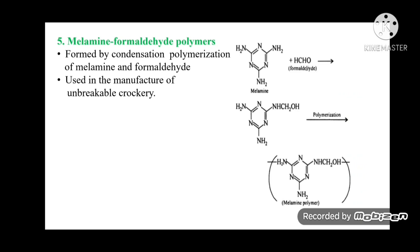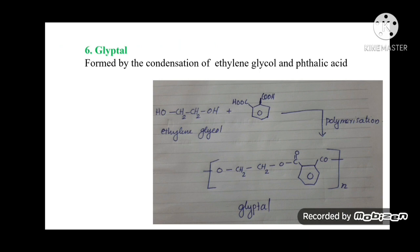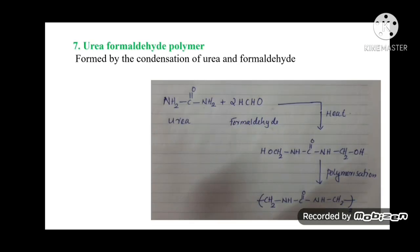Melamine-formaldehyde polymer is formed by condensation polymerization of melamine and formaldehyde, and is used in manufacture of unbreakable crockery. Glyptal is formed by condensation of ethylene glycol and phthalic acid. Urea-formaldehyde polymer is formed by condensation of urea and formaldehyde.